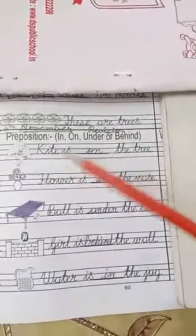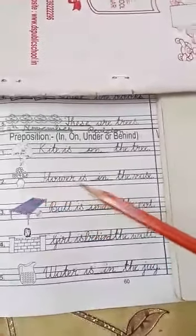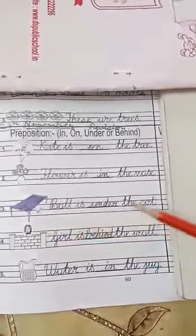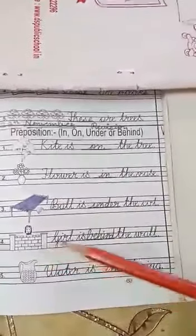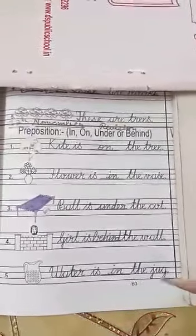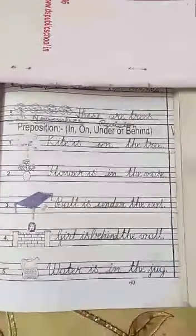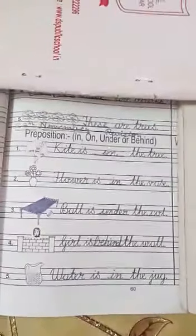So we will repeat once again. Upar ke liye on ka use karte hai: kite is on the tree, number two. Flower is in the vase, yani mein ke liye in ka use karte. Number three, ball is under the cot, niche ke liye under ka use karte. Number four, girl is behind the wall, pichay ke liye behind ka use karte. Number five, water is in the jug, mein ke liye in ka use. So you will do this work neat and clean and try to understand also for unit two exam. Bye, see you, take care.